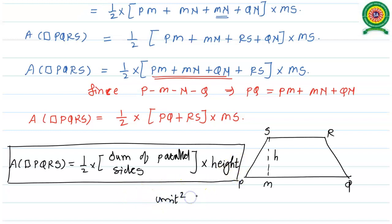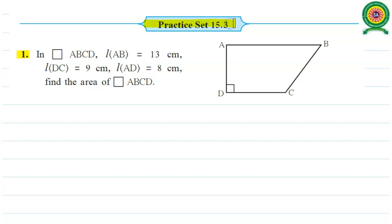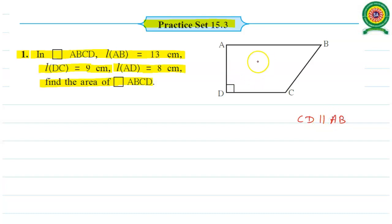Now look at the first question from Practice Set 15.3. In quadrilateral ABCD, length of AB is 13 cm, length of DC is 9 cm, length of AD is 8 cm; find the area of quadrilateral ABCD. Looking at quadrilateral ABCD in which CD is parallel to AB, so it is a trapezium. We have CD equals 9 cm, AB equals 13 cm, and length of AD equals 8 cm. So AD is the height of the given trapezium, while AB and CD are the parallel sides.